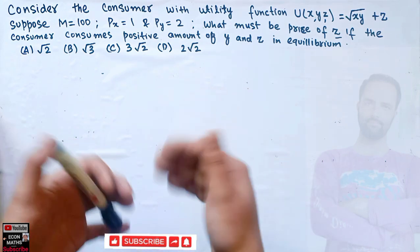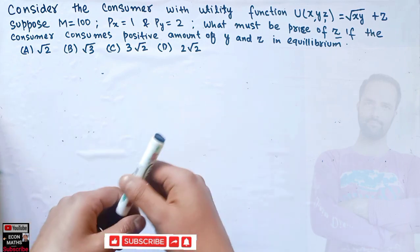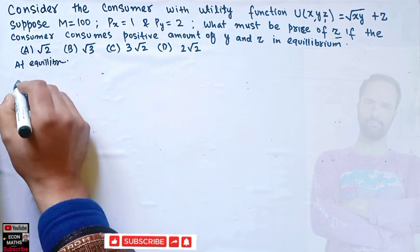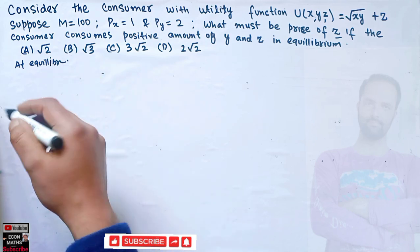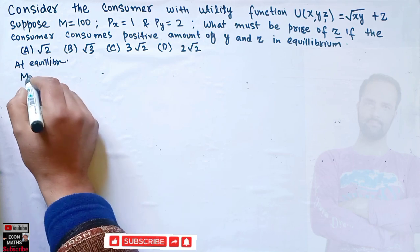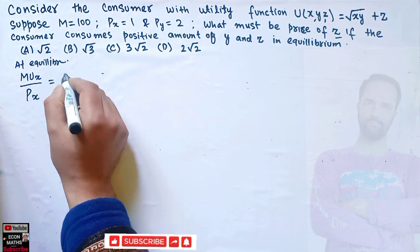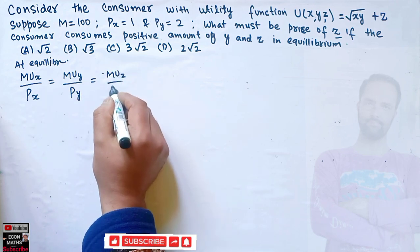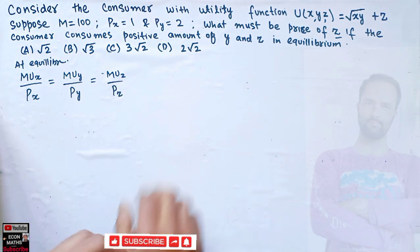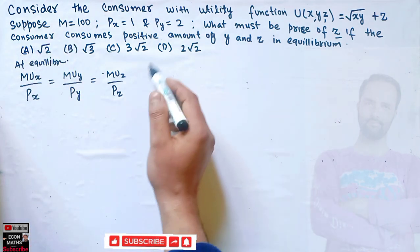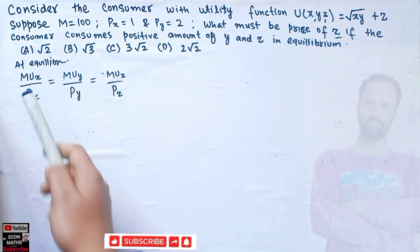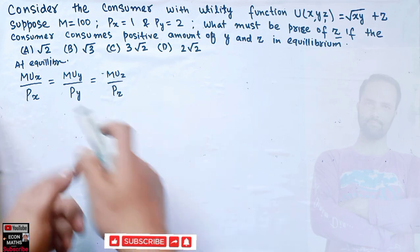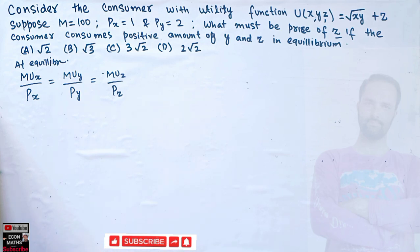At equilibrium, the consumer will be at equilibrium when the ratio of marginal utility to price is equal across goods. This is the equilibrium condition in case of three goods: marginal utility of x over price of x equals marginal utility of y over price of y equals marginal utility of z over price of z. This is also called the Law of Equimarginal Principle.